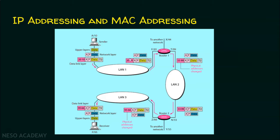So the router removes the source and destination MAC addresses and puts new MAC addresses. The packet entered via interface F/20 and exits via interface T/99. When leaving interface T/99, the source MAC address becomes 99, and the adjacent router's incoming interface MAC address 33 becomes the destination MAC address. So the physical addresses are changed during transmission — it is now 33 as destination MAC address and 99 as source MAC address.